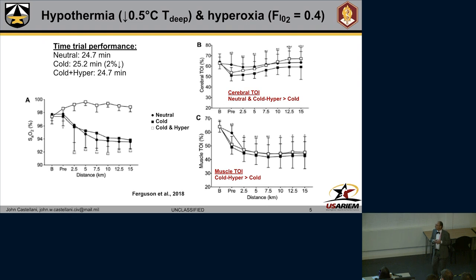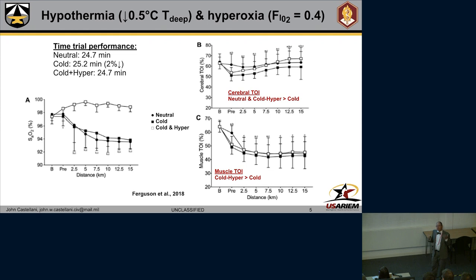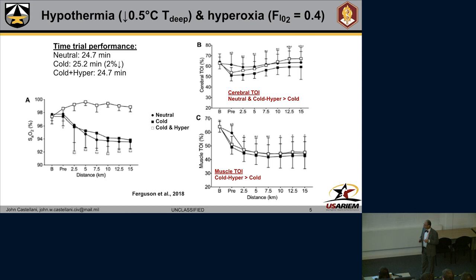Importantly, they also measured cerebral blood flow as well as muscle flow using near-infrared spectroscopy. Looking at the cerebral oxygenation index, when they gave hyperoxia, the cerebral tissue oxygenation index was similar to the neutral condition and was greater than cold — providing some evidence of why subjects worked better when given higher oxygen levels, suggesting maybe a central drive. Similarly, they found that muscle tissue oxygenation index was also higher when given oxygen. So maybe oxygen availability really is the issue with the lack of performance when we have a decrease in deep body temperature.